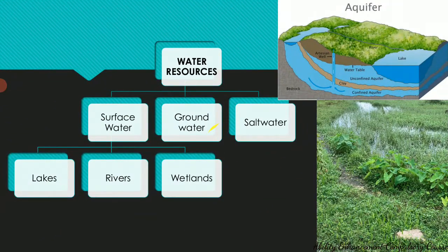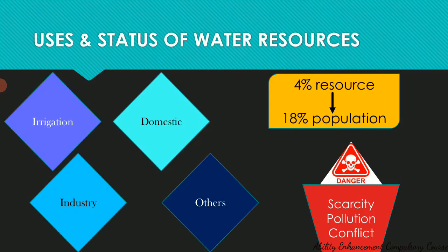That covers groundwater present in the form of aquifers below the soil. We also have salt water or oceanic water which is unavailable for use, but that is what is present more on the earth's surface. These are the different types of water resources.